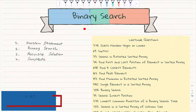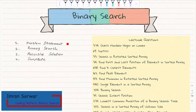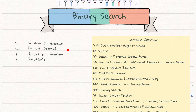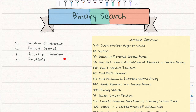Today we'll talk about binary search. Our flow of discussion: first we will talk about a problem statement, then we will look into binary search, after that we will look at a recursive solution, and then we will talk about some templates — what are the little changes in binary search and how those changes reflect in your problem statement.